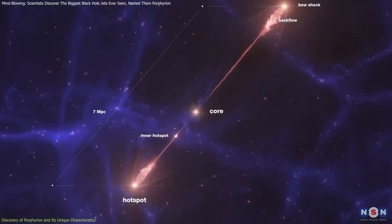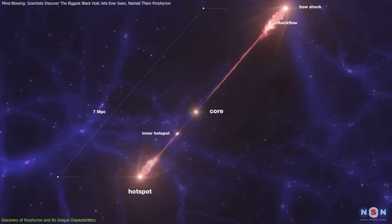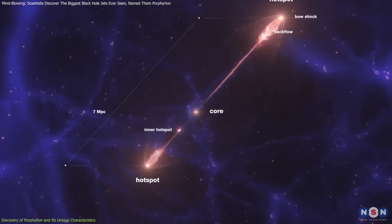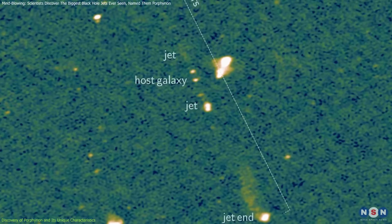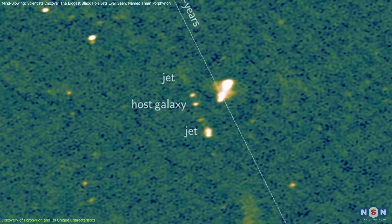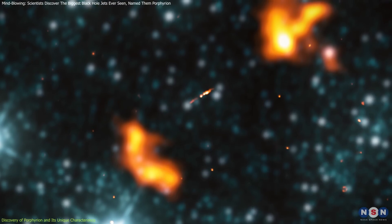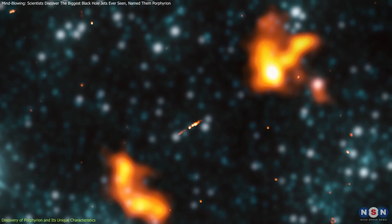These jets are so vast that they span a distance equivalent to lining up 140 Milky Way galaxies end-to-end. What's more, Porphyrion dwarfs the previous record holder, Alcyoneus, which was also a giant jet system discovered in 2022.